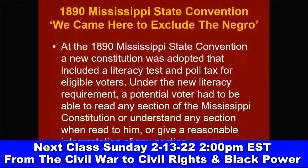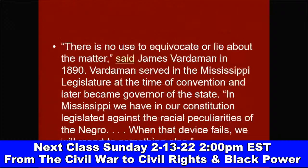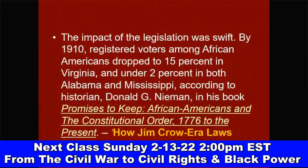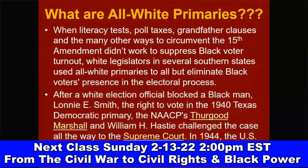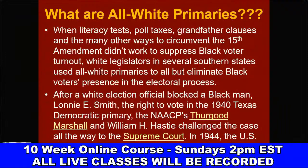We deal with the Mississippi State Convention of 1890, where Judge Solomon Saladin Calhoun stated they 'came here to exclude the Negro.' Poll taxes and literacy tests were written into the Mississippi state constitution to suppress the African-American vote in a state where African Americans were the majority of the population and voters. This became known as the Mississippi Plan and was adopted by other southern states. We also examine all-white primaries in Texas, a way to exclude Black voters, which the U.S. Supreme Court ruled unconstitutional in Smith v. Allwright in 1944 — a case argued by Thurgood Marshall.